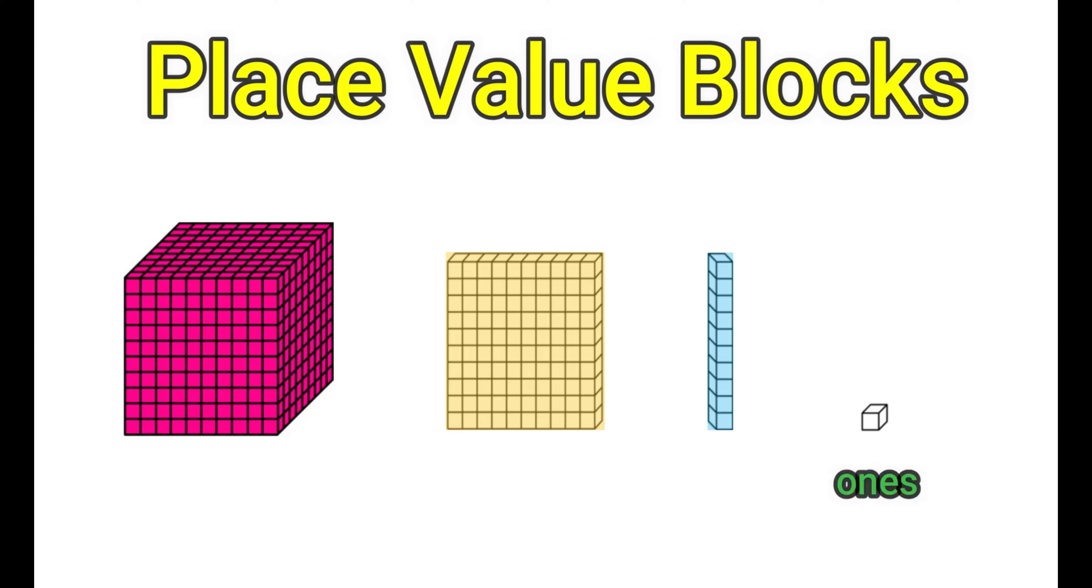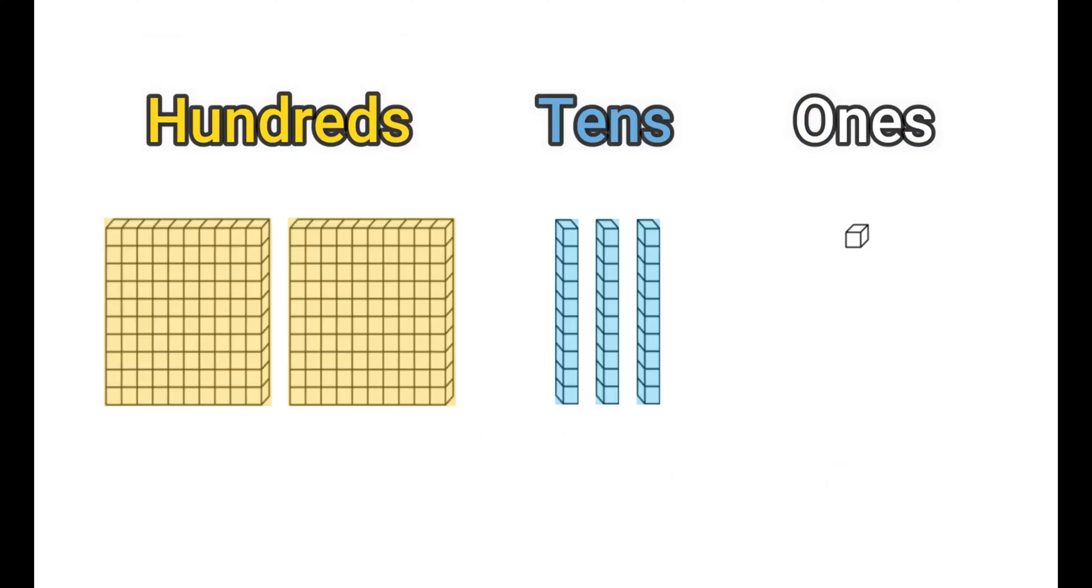The small blocks that are only individual pieces represent ones. Skinny blocks that are tall represent tens. Blocks that have rows and columns of 10 represent hundreds. And blocks that are cubes and are pretty much too many to count represent thousands.